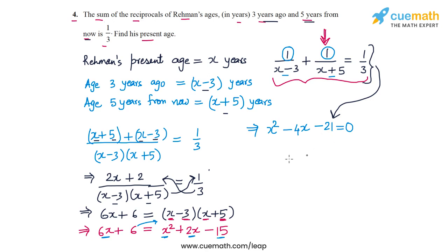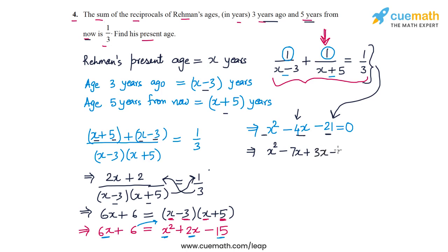This quadratic equation is easy to solve. We can split the middle term or apply the quadratic formula. Let's split the middle term: we need two numbers whose sum is -4 and whose product is -21. We can split -4x as -7x + 3x, giving us x² - 7x + 3x - 21 = 0.